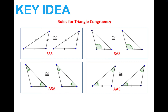Key idea — note this in your notebook. These are the rules for proving triangles are congruent. If you know three sides are congruent between two triangles, they must be congruent: that's SSS. If you have a side, angle, side the same in both triangles, that proves congruence: SAS. If you have angle, side, angle the same in both, that also proves congruence: ASA. And if you know angle, angle, side in both triangles, those triangles must be congruent: AAS. Those are four ways of proving triangles congruent — you only need to know three parts, not all six.